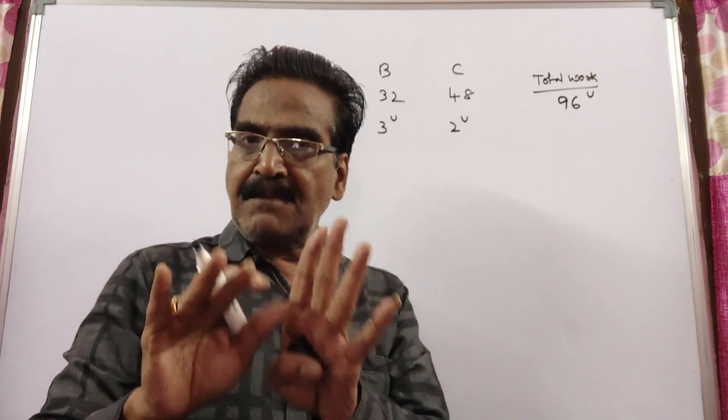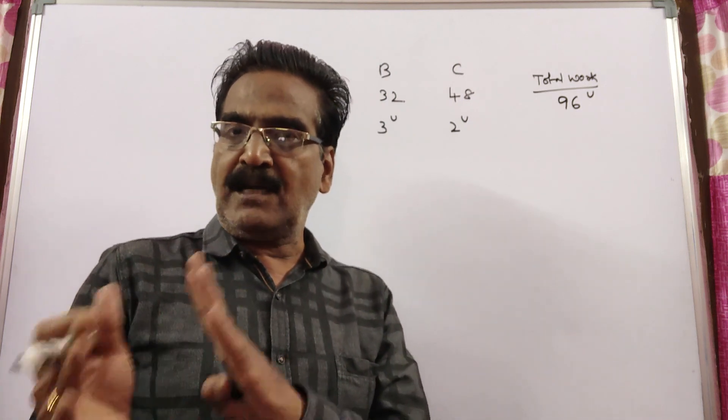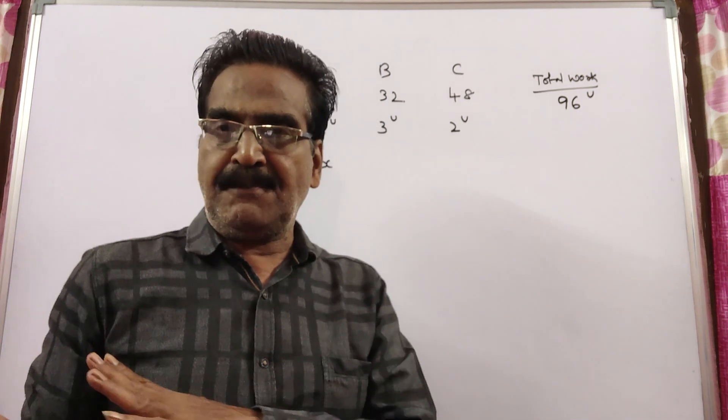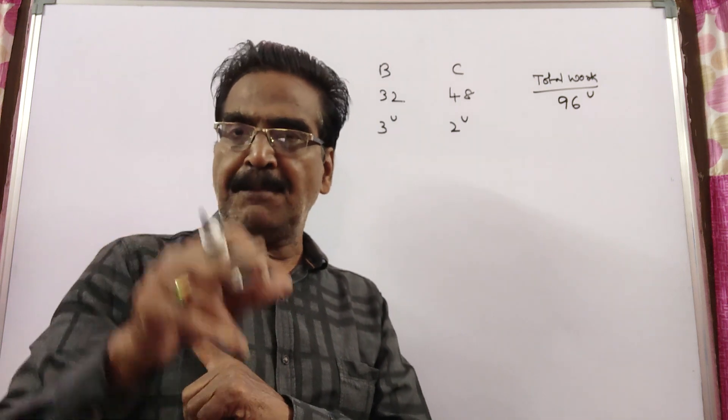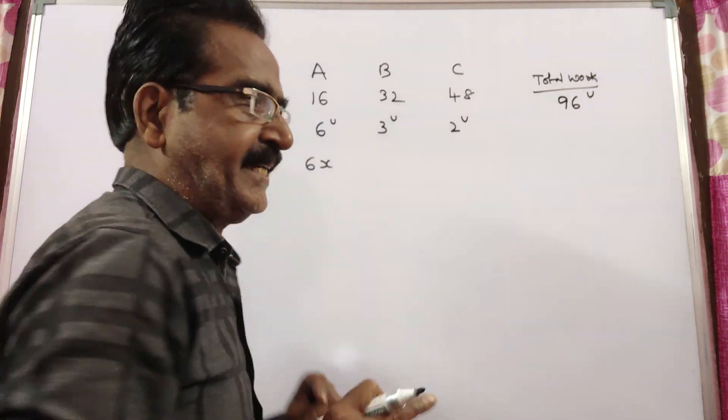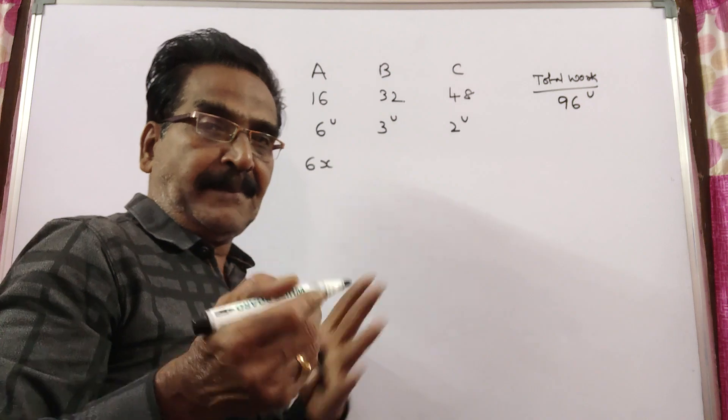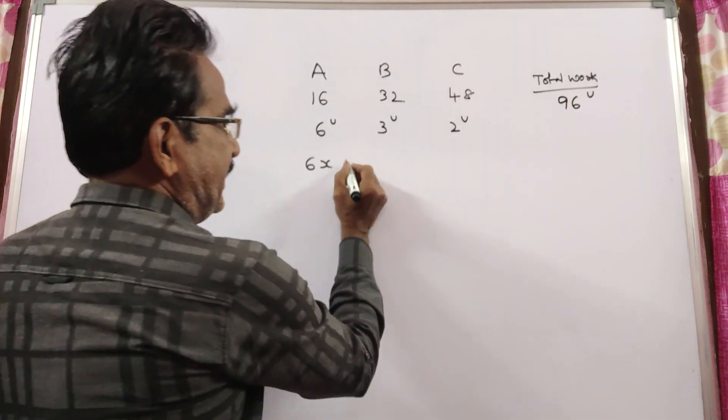B worked for X minus 8 days. Because B left 8 days before the completion of the work. So, the work completed by B in X minus 8 days.